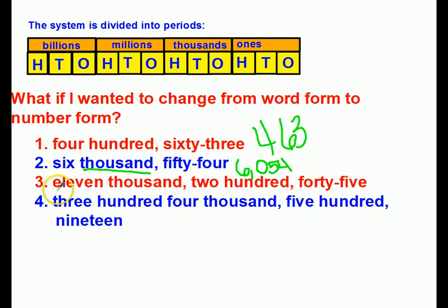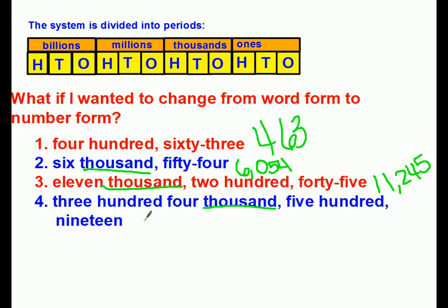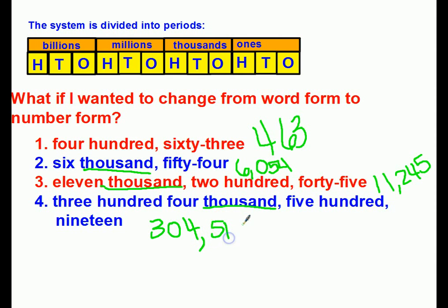Taking a look at number three, I see another signal word: thousand. How many thousands? Eleven thousand. So eleven thousand and 245 units is going to look like 11,245 — there's my comma to separate the periods, and then two hundred and forty-five. Now for the six-digit number: when I look for signal words, there it is — thousand. How many? Three hundred and four thousand. I know how to write three hundred and four: 304. Then I put my comma, and three hundred and four thousand five hundred and nineteen units is 304,519. That's how you write a six-digit number.